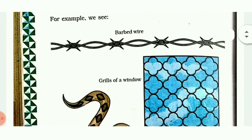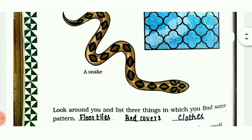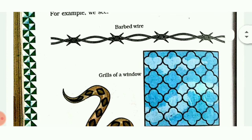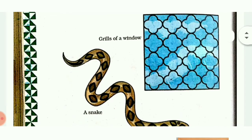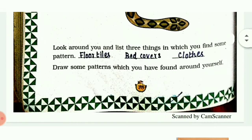For example, we see barbed wire, grills of a window, a snake. We see many patterns around us - in our dresses, shorts, pillow covers, screens, windows, and doors. Look around you and list three things in which you can find some pattern.